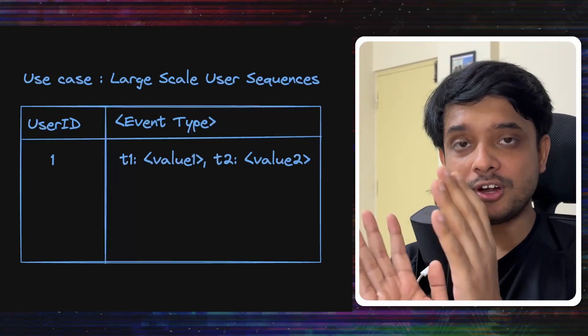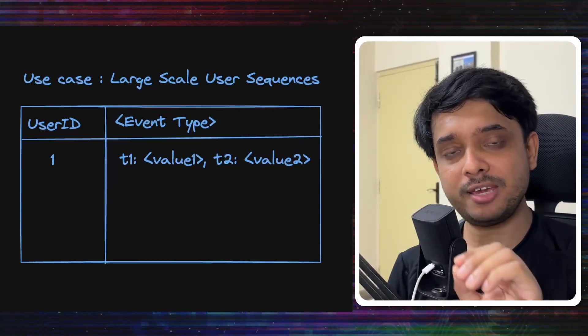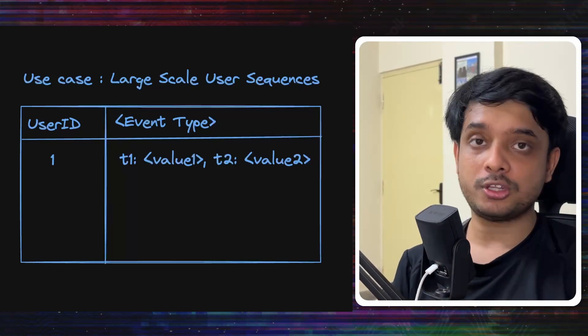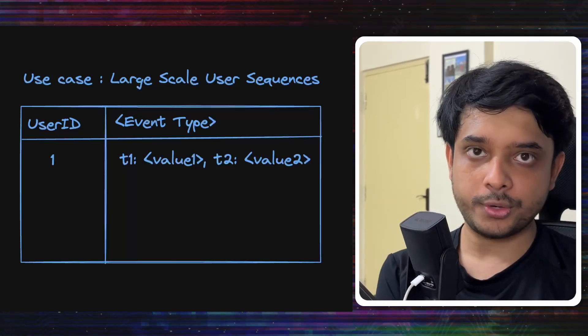So you see the data is stored for each user for each action type across time. So they can do analytics across time with all this data that they have.